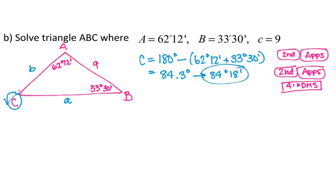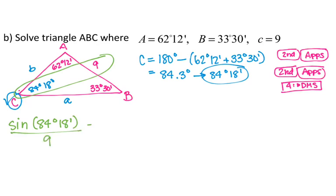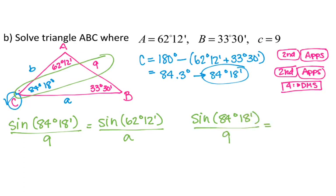Now I have angle C equals 84 degrees 18 minutes. I'll use the corresponding pair of angle C and side c as my ratio. Setting up: sine of 84°18' over 9 equals sine of 62°12' over side a, and also sine of 84°18' over 9 equals sine of 33°30' over side b.